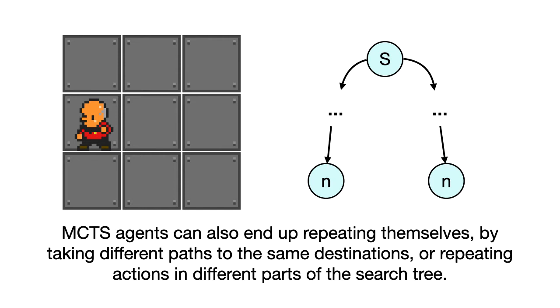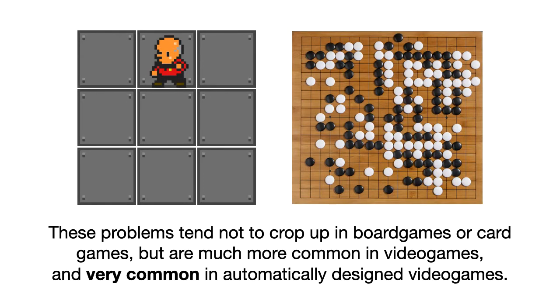Now in many of the scenarios where MCTS is commonly applied, these problems don't actually crop up that much. I'm thinking here board games, card games, certain adversarial video games, but in general they are more common in video games. And in my field, automatic game design, they are very common, particularly in badly designed games, which we see a lot of in AGD.